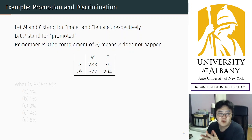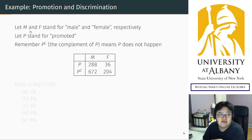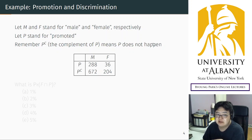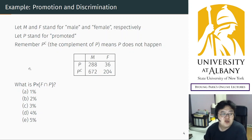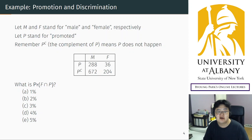Those who are not promoted are denoted as P complement, or P superscript C. When you define event P as promotion, P complement is automatically defined as promotion not happening — meaning they are not promoted. We can rewrite the table using this simplified notation.